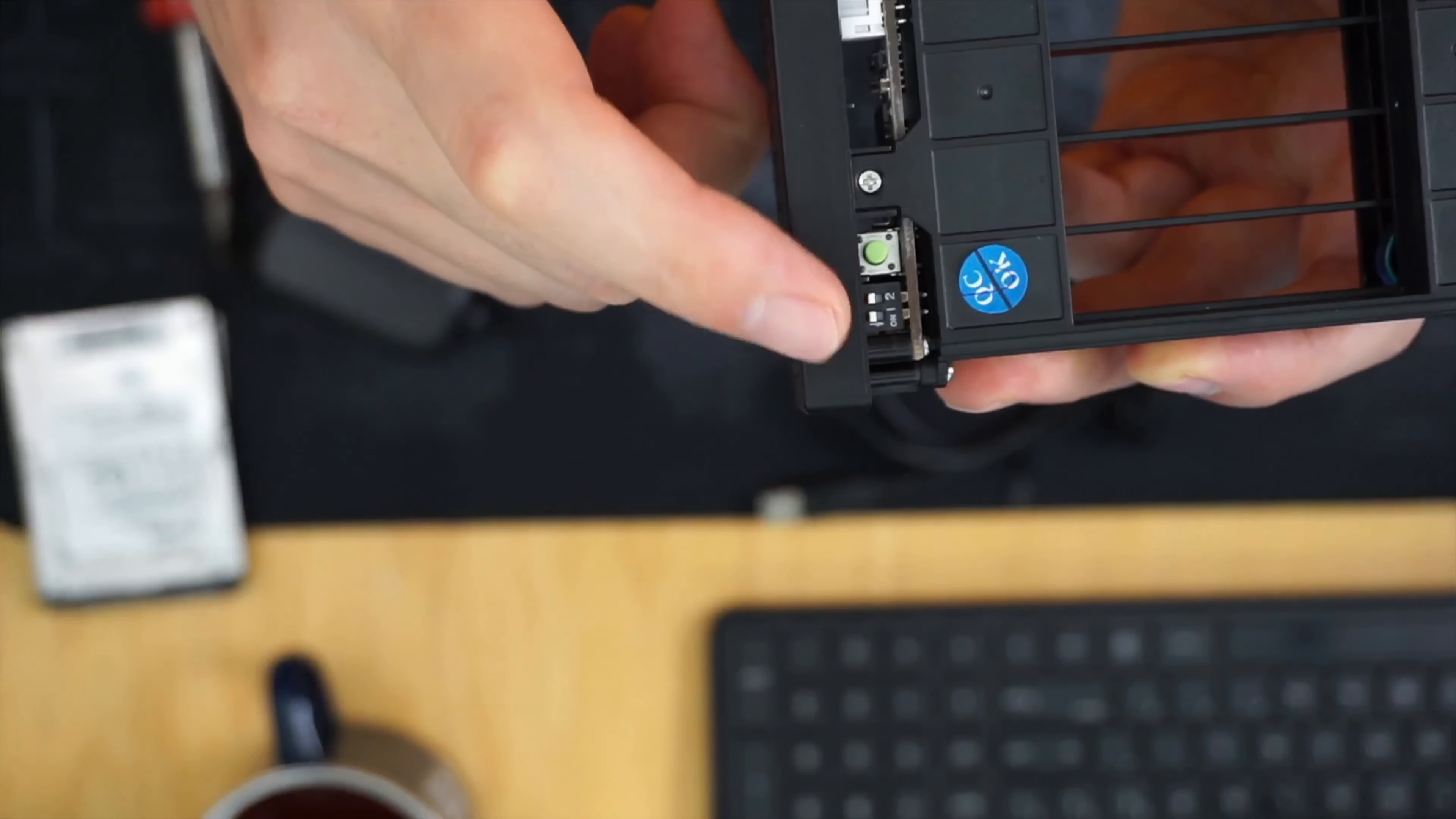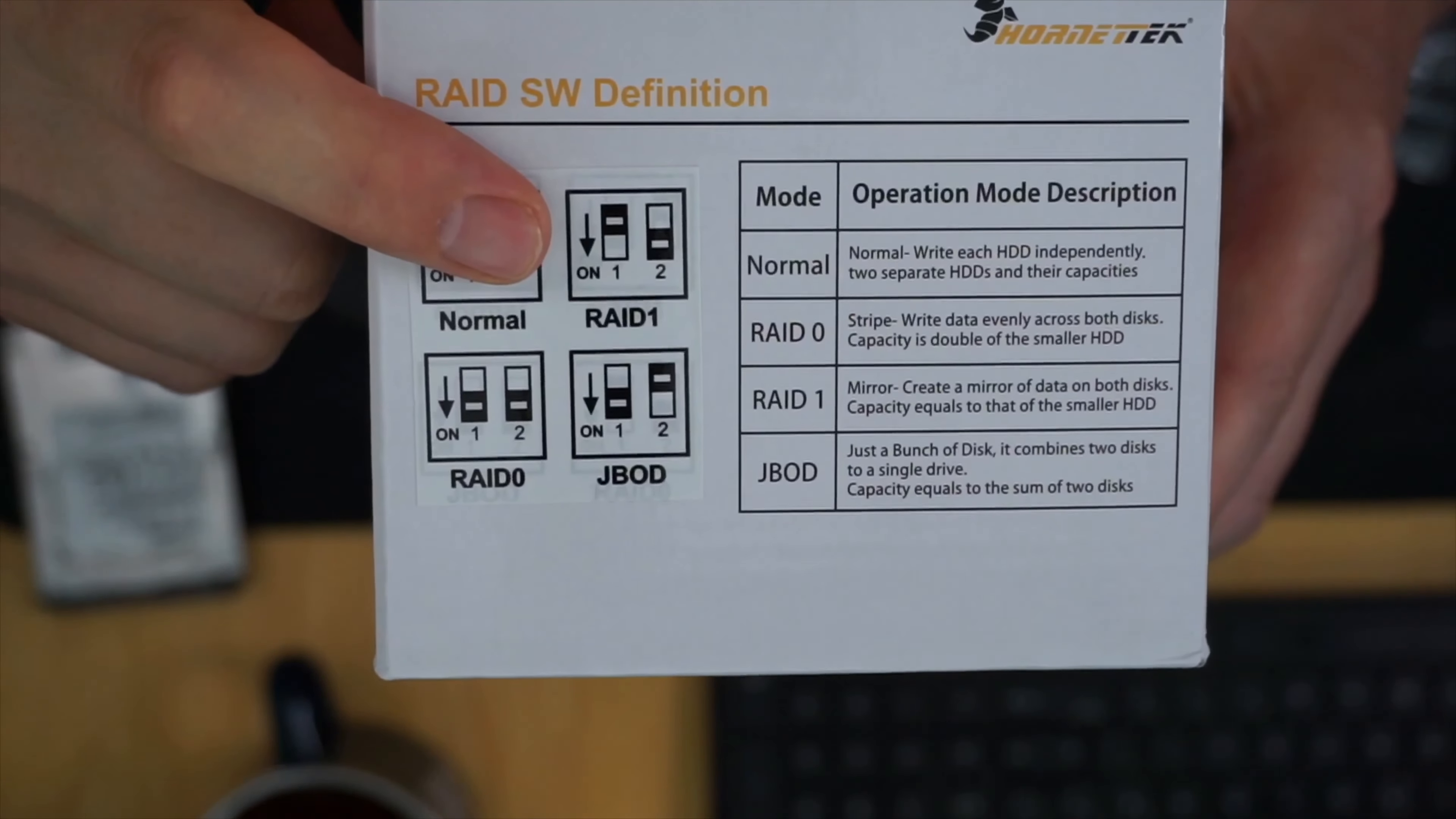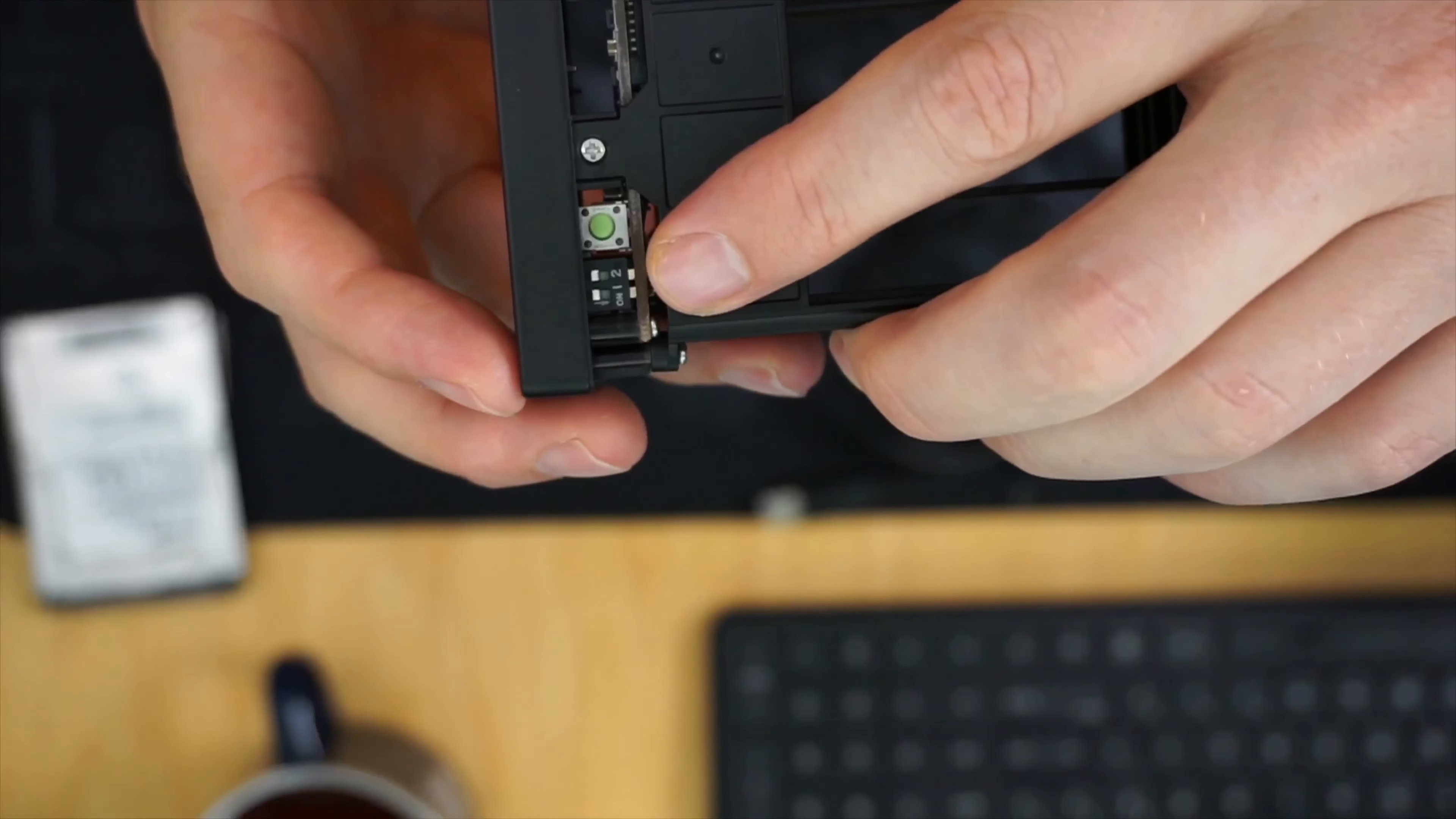So first thing we want to do is undo the screws off the back of here. Once that's done, we can pull that apart. Basically what we're going to be concerned with here are the two toggle switches and the reset switch. If we look at the box, we have our different RAID orientations. Normal would be having it as two hard drives, RAID 0 would be striped or one hard drive but extra fast, RAID 1 would be one drive mirroring the other, and JBOD would be the two disks added together. Right now the two white switches are above, and so this should be as two disks. So let's see what happens.